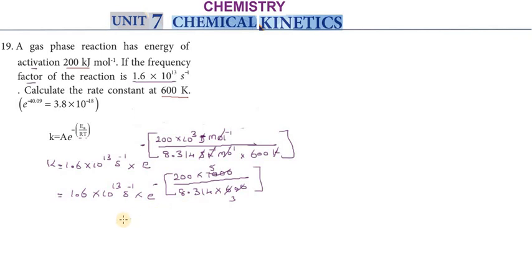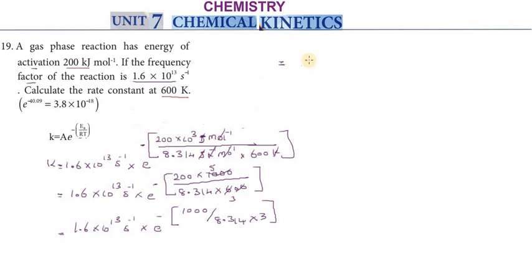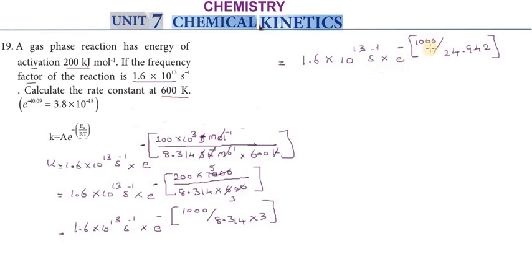200 into 5 total gives around 1000. So again: 1.6 into 10 to the power 13 per second into E to the power minus of 200 into 5, which gives around 1000 divided by 8.314 into 3. Dividing further, 1.6 into 10 to the power 13 per second into E to the power minus 1000 divided by 8.314 into 3, giving 24.942. So either way, the exponent simplifies to minus 40.09.